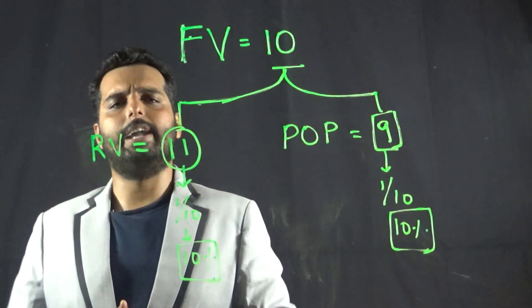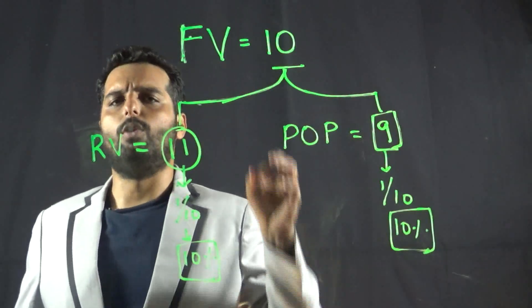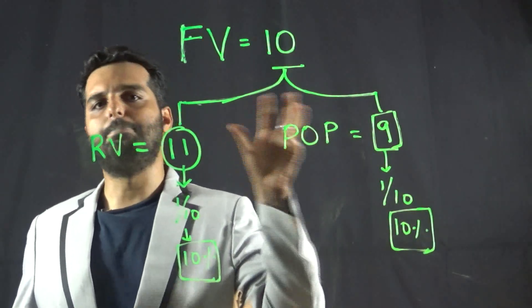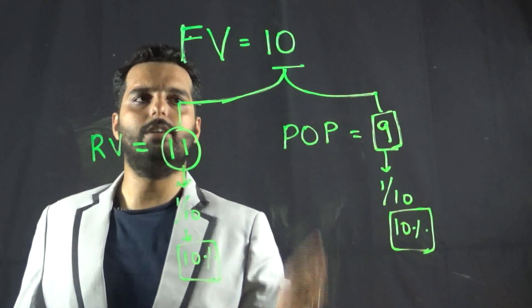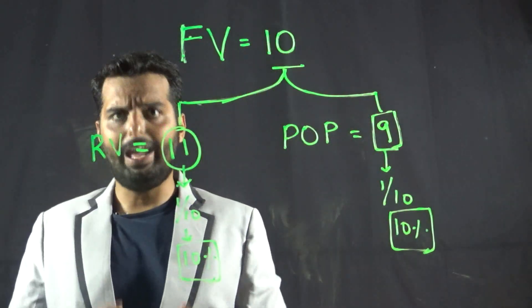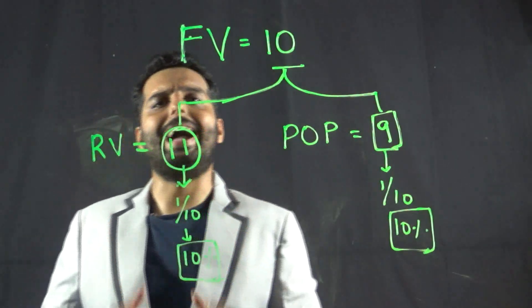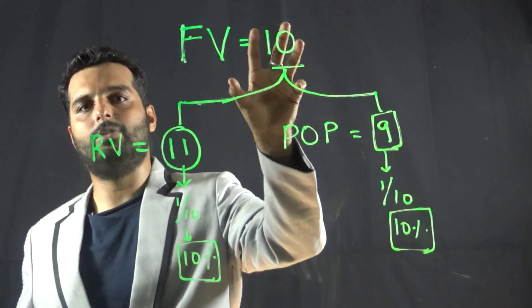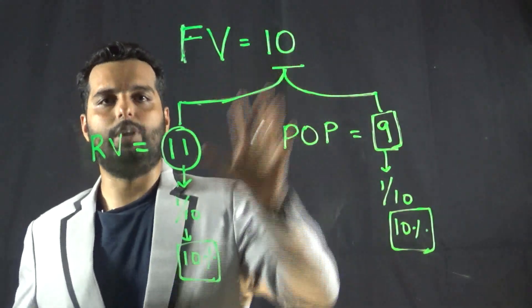So, in very simple language, the formula for front-end load would be the difference between the public offer price and the face value divided by the face value, and the formula for back-end load would be the redemption price minus the face value divided by the face value.